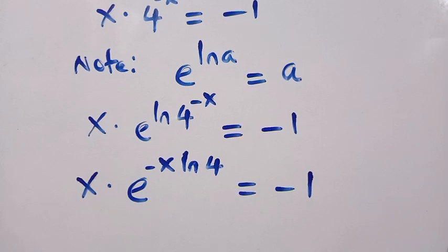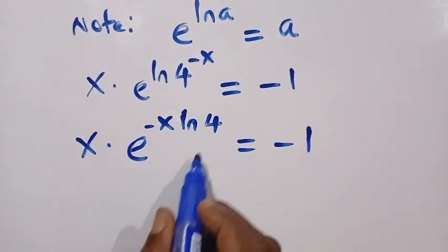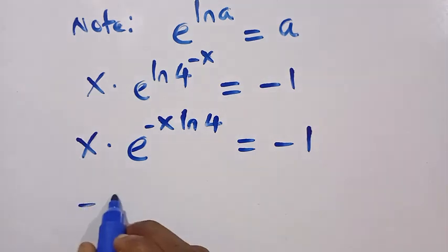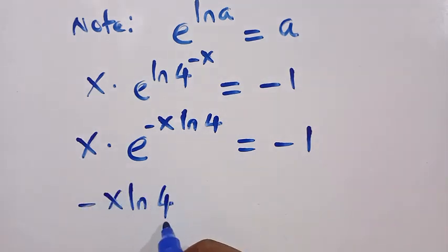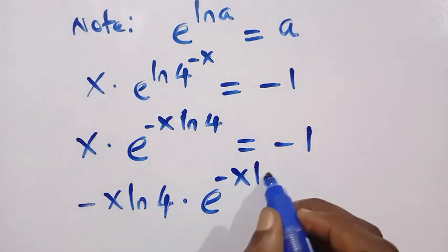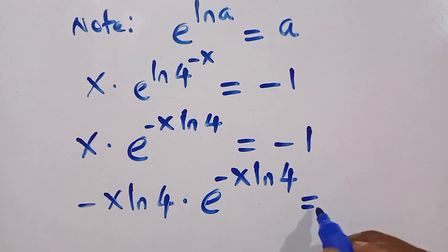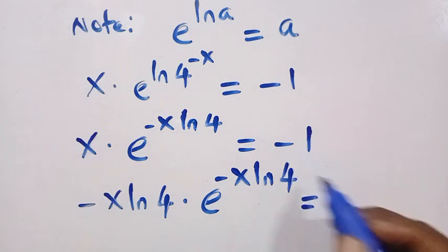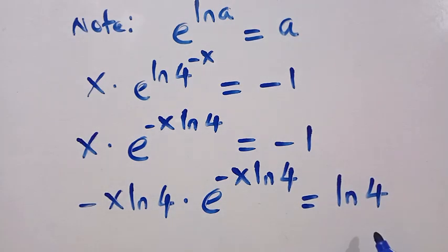Multiplying both sides by minus ln 4, the left side becomes (minus x·ln 4) multiplied by e to the power of (minus x·ln 4), and on the right side minus 1 times minus ln 4 becomes positive ln 4.